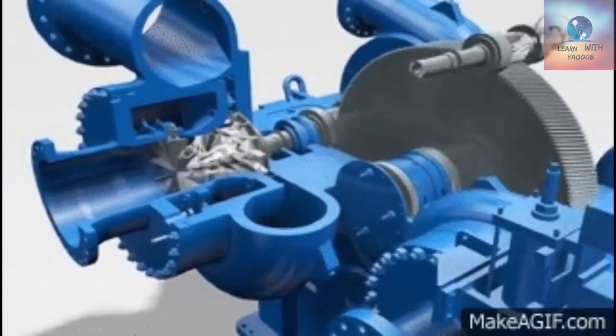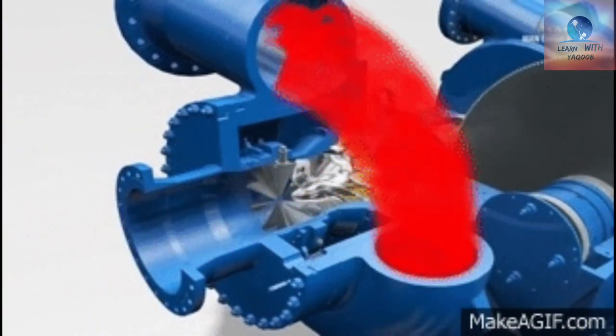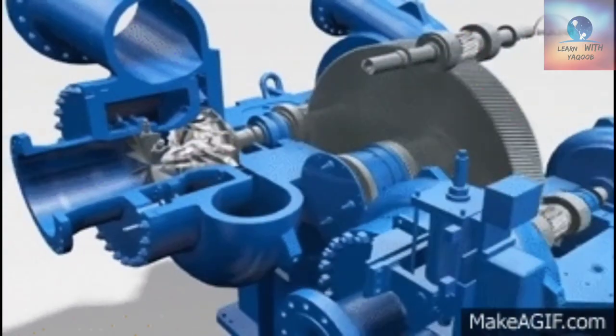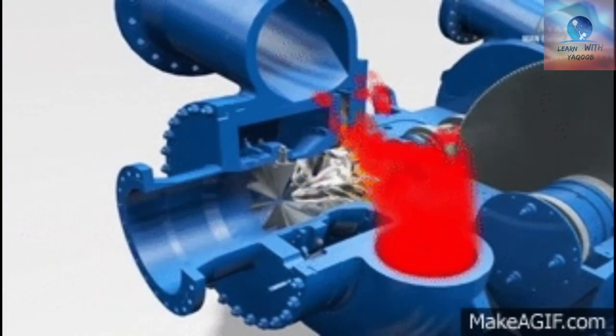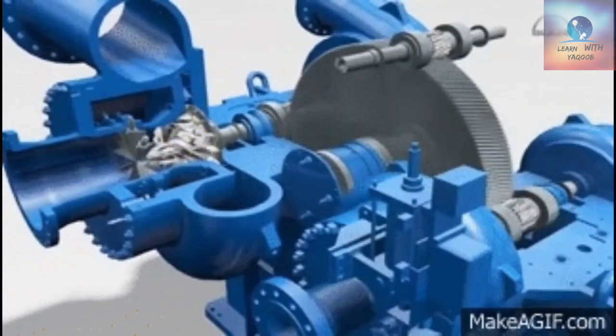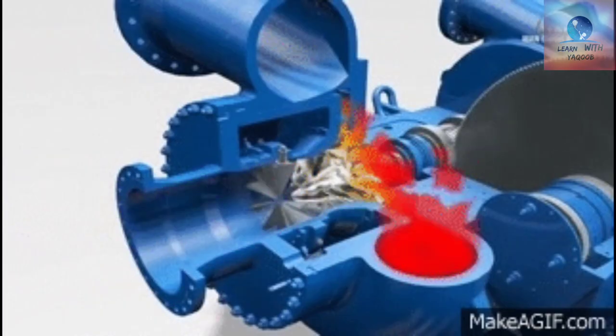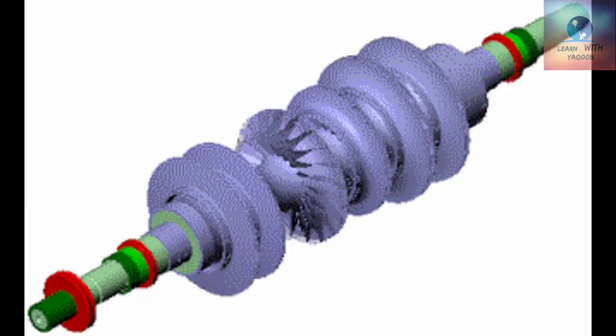Almost identical in construction to centrifugal pumps, centrifugal compressors increase the velocity of gas by throwing it outward by the action of a spinning impeller. The gas expands in a casing volute where its velocity slows and its pressure rises. Centrifugal compressors have lower compression ratios than displacement compressors, but they handle vast volumes of gas. Many centrifugal compressors use multiple stages to improve the compression ratio. In these multi-stage compressors, the gas usually passes through intercoolers between stages.